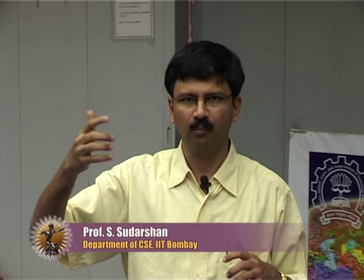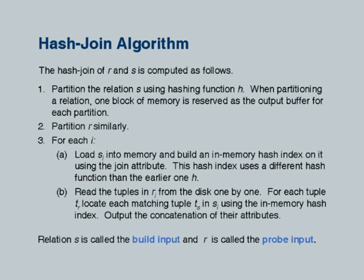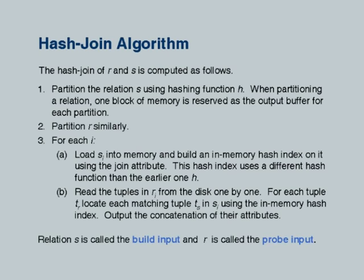Suppose I have a 100 megabyte relation being joined with a 5 megabyte relation. It makes sense to use the 5 megabyte relation as the build relation. With 1 megabyte of memory, I break it into 5 pieces and each fits in memory. Each partition of the 100 megabyte relation is 20 megabytes, but that does not matter — I load the 1 megabyte S partition into memory, build an index, then read the corresponding 20 megabytes of R sequentially. For each record I probe the index, output matches, and move on. The number of IOs is very small. The other relation is called the probe input because after building the in-memory index, I probe using the other relation.